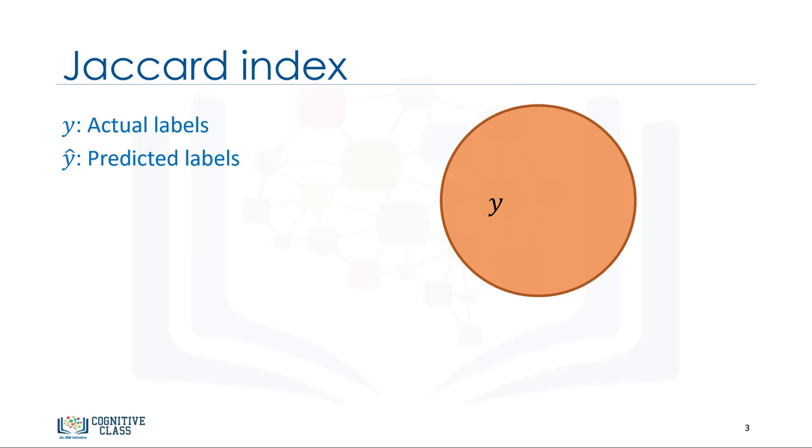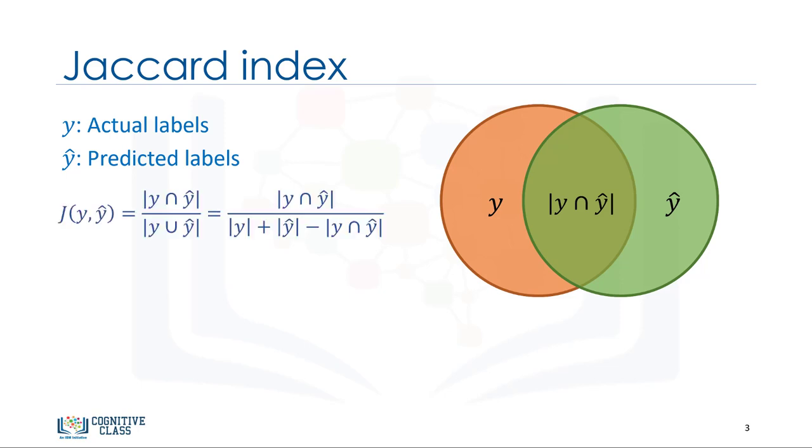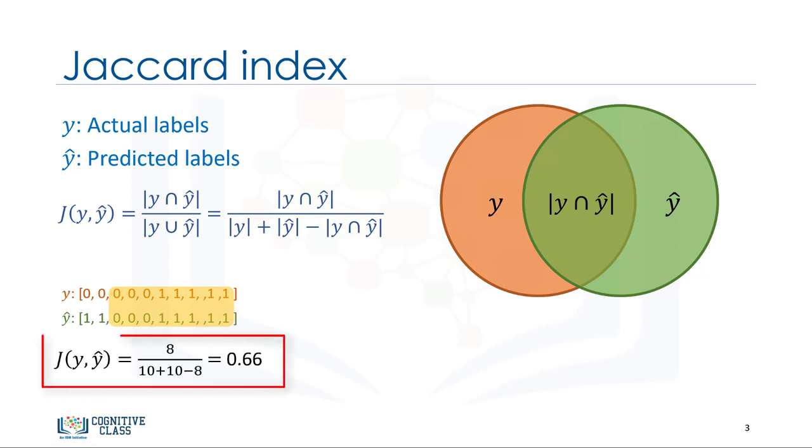Let's say y shows the true labels of the churn dataset, and y-hat shows the predicted values by our classifier. Then we can define Jaccard as the size of the intersection divided by the size of the union of two label sets. For example, for a test set of size 10 with eight correct predictions or eight intersections, the accuracy by the Jaccard Index would be 0.66.